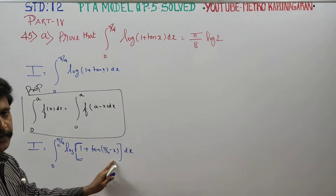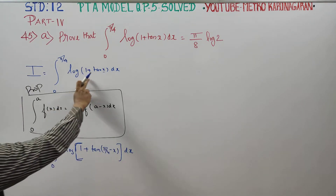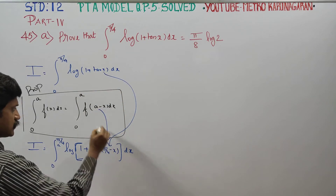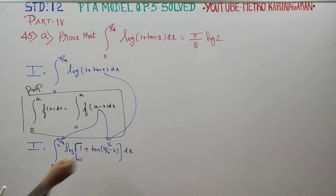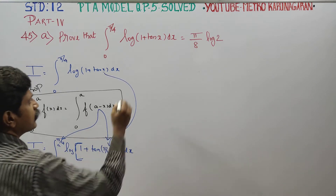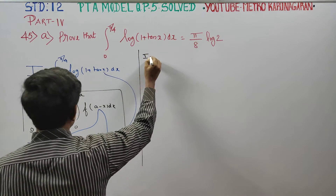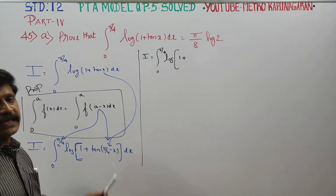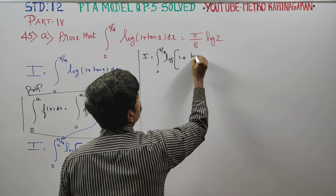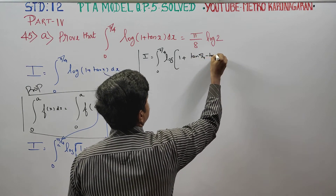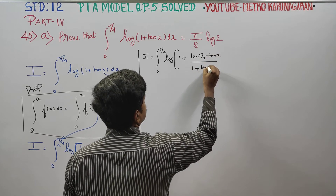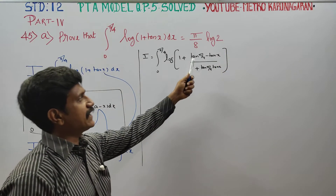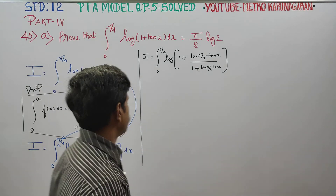Since a = π/4, we apply the tan(A − B) formula inside the logarithm. The tan(A − B) formula is: tan(A − B) = (tan A − tan B) / (1 + tan A · tan B). So tan(π/4 − x) = (tan 45° − tan x) / (1 + tan 45° · tan x).